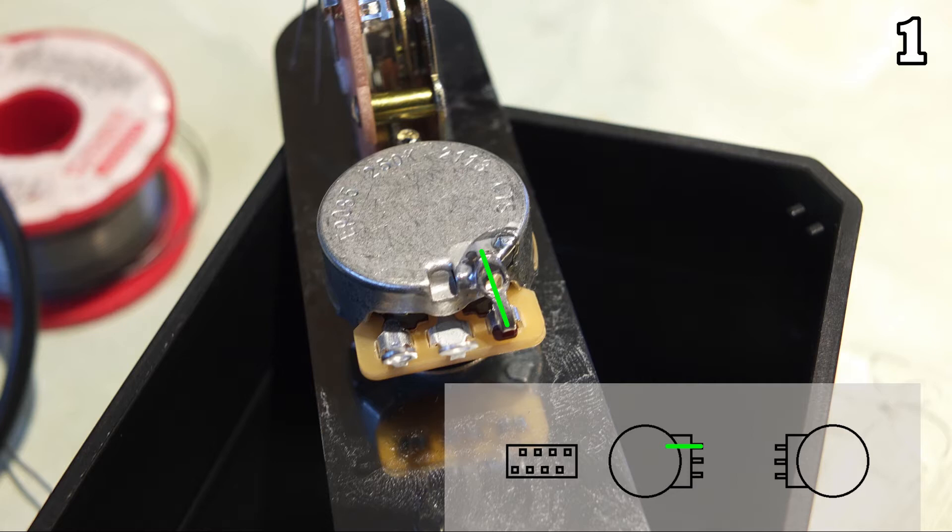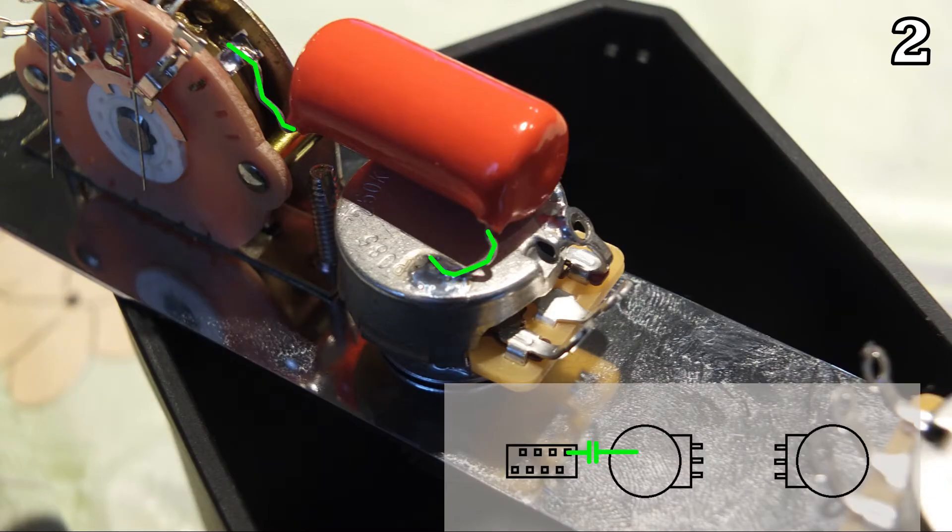When your toggle switch is to your left, the top pin of the volume pot is going to ground. If you're converting a Telecaster control plate, this might very well be already the case. With this we're already at step two.